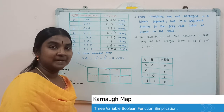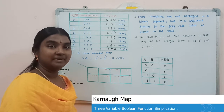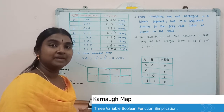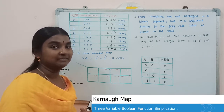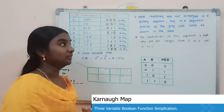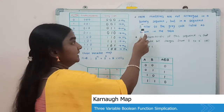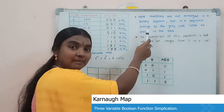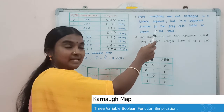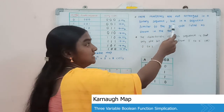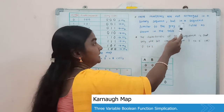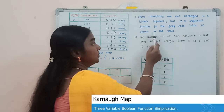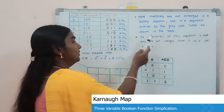We will see the arrangement of the three-variable K-map and how the min terms are arranged. The min terms are not arranged in a binary sequence, but in a sequence similar to the Gray code, as shown in the table.